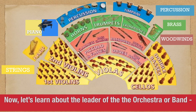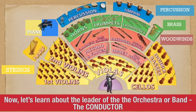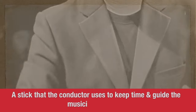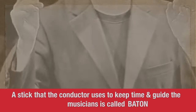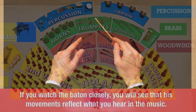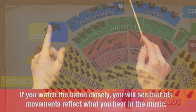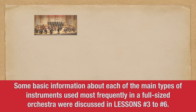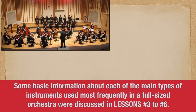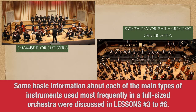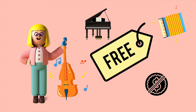Now let's learn about the leader of the orchestra or band: the conductor. The conductor stands in front of the group and directs them in the performance. A stick that the conductor uses to keep time and guide the musicians is called a baton. If you watch the baton closely, you will see that these movements reflect what you hear in the music. Some of the basic information about each of the main types of instruments used most frequently in a full-sized orchestra will be discussed in lessons number three to number six.